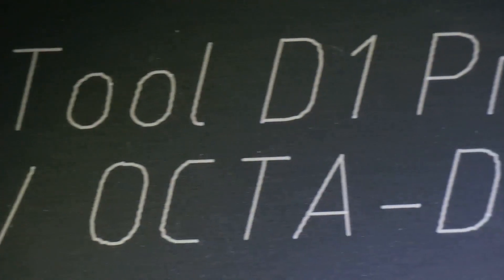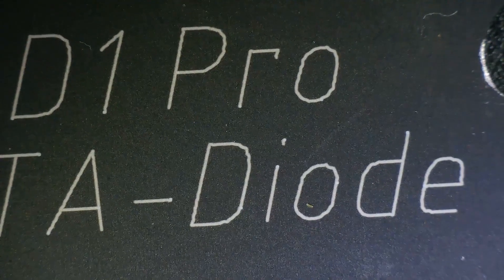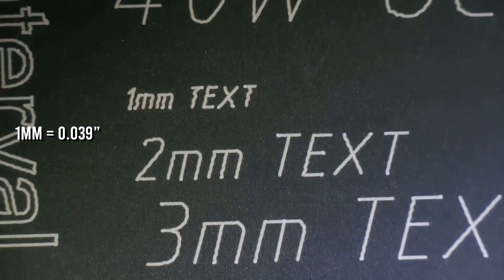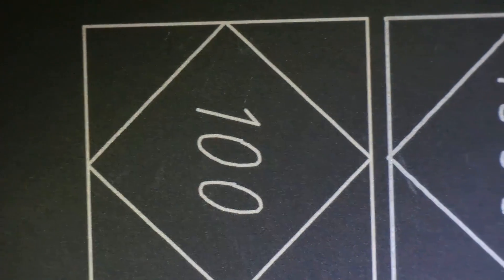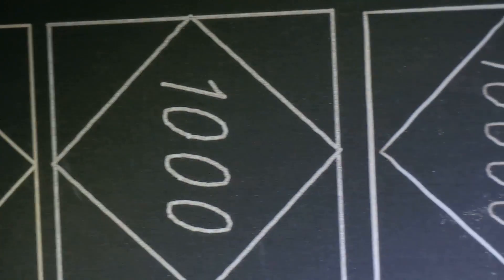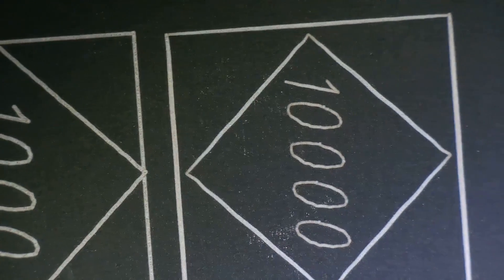This machine has exceptional mechanical stability. There are very little mechanical vibrations and the engravings are very detailed. Even the smallest 1mm text is easily readable. With these squares you can see how the accuracy changes with speed from 100 to 10,000 mm per minute. The upgraded X-axis has made a lot of improvement.